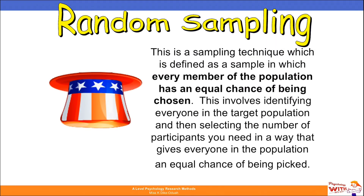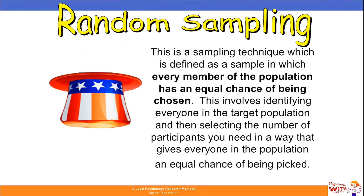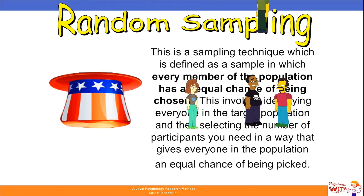For random sampling, this is a technique defined as a sample in which every member of the population has an equal chance of being chosen. This involves identifying everyone in the target population and then selecting the number of participants you need in a way that gives everyone an equal chance of being picked. You put the entire population into a hat, then pull them out at random, and that random selection forms your sample.